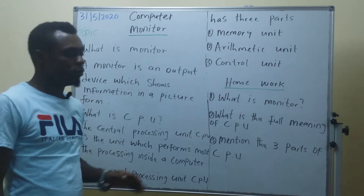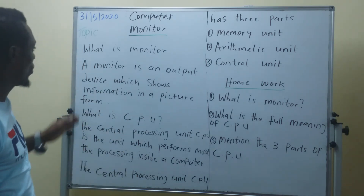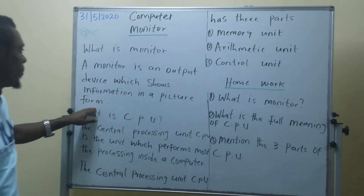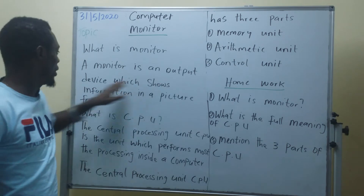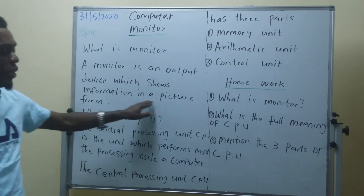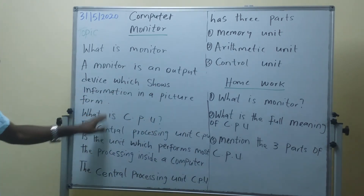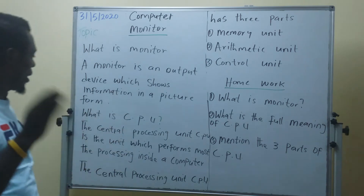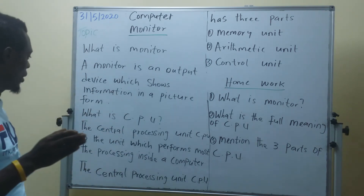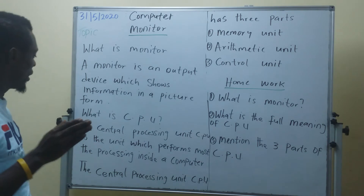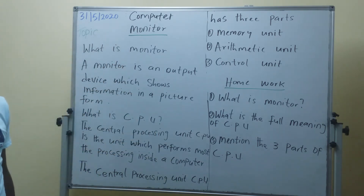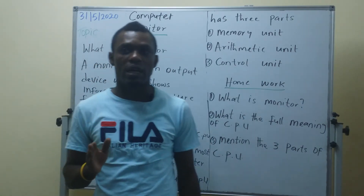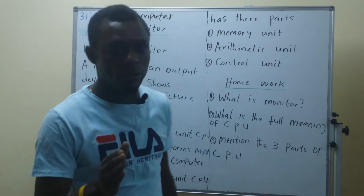Let me repeat again. What is a monitor? A monitor is an output device which shows information in a picture form. And we have the CPU, which is the central processing unit. The central processing unit is the unit which performs most of the processing in a computer.